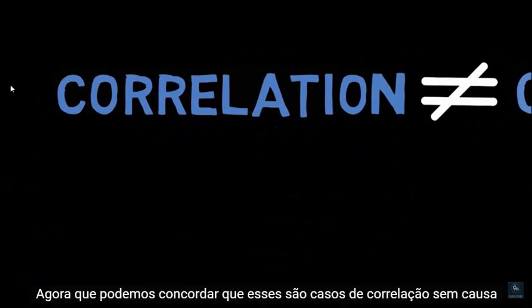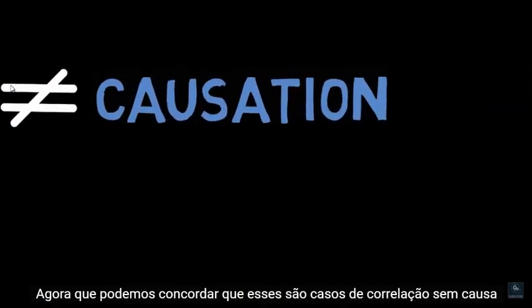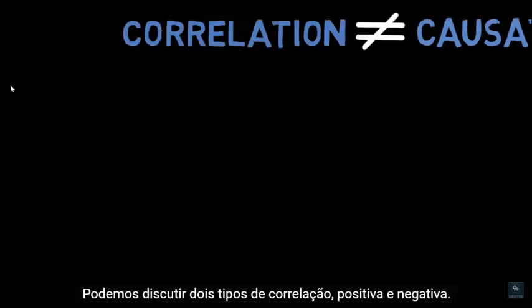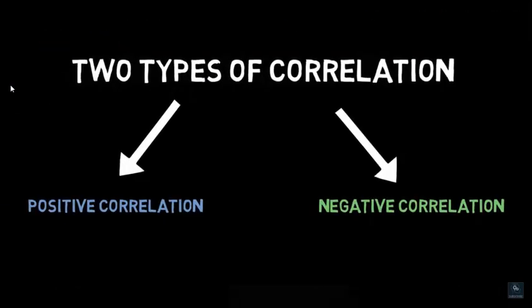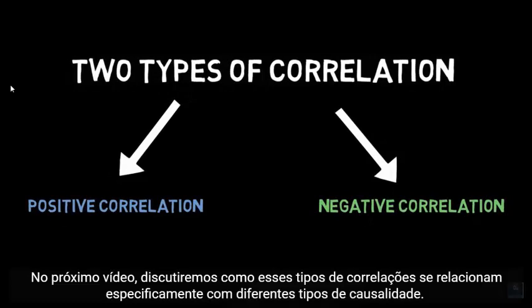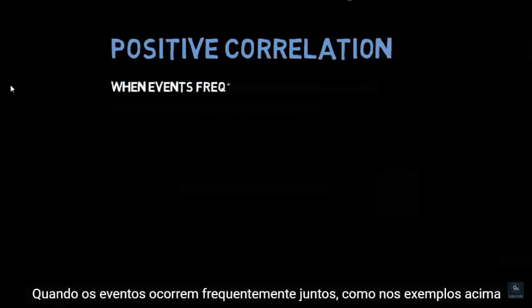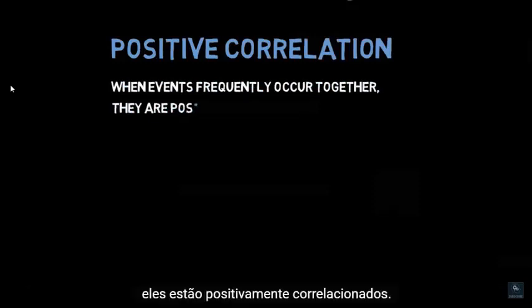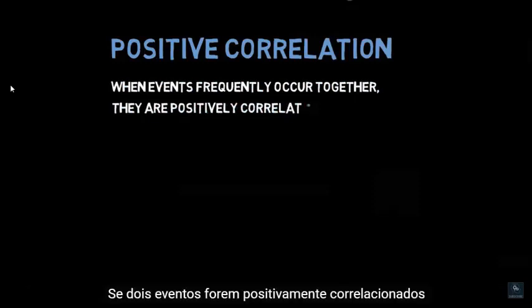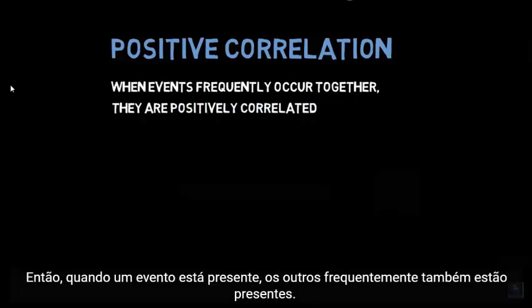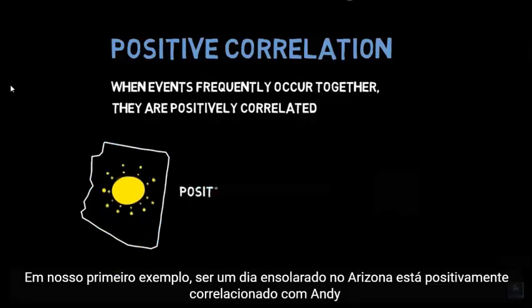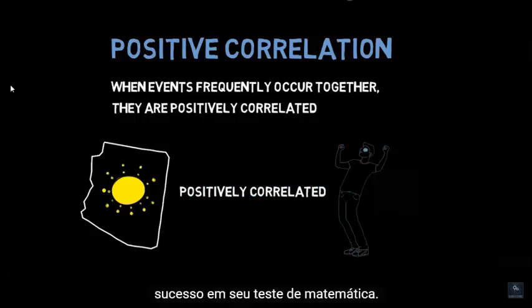Now that we can agree that these are cases of correlation without causation, we can discuss two types of correlation: positive and negative. In the next video, we'll discuss how these types of correlations specifically relate to different types of causation. When events frequently occur together, they are positively correlated. If two events are positively correlated, then when one event is present, the other is often present as well. In our first example, it being a sunny day in Arizona is positively correlated with Andy succeeding on his math test.